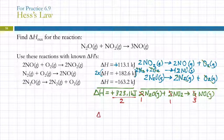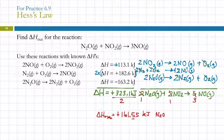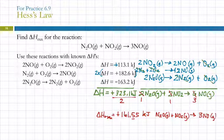So the heat of reaction is plus 161.55 kilojoules, and that would be for the N2O plus the NO2 going to 3 NO. Any questions?